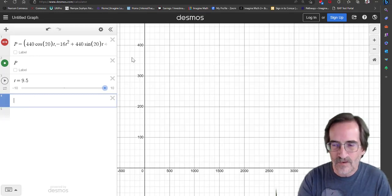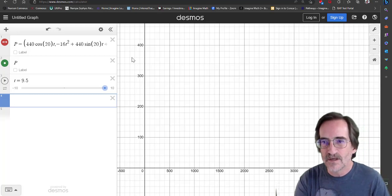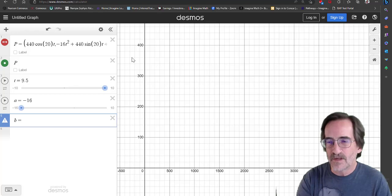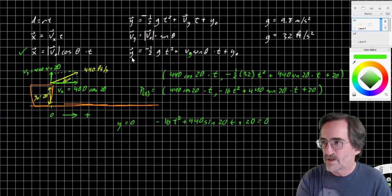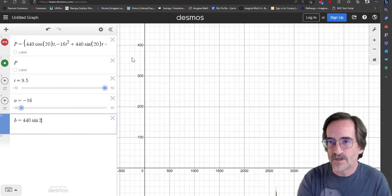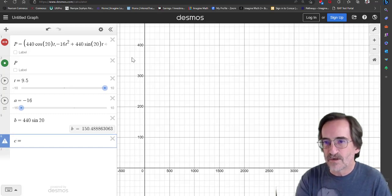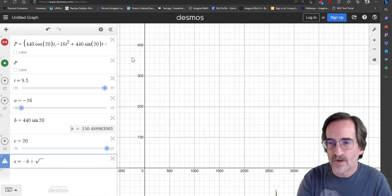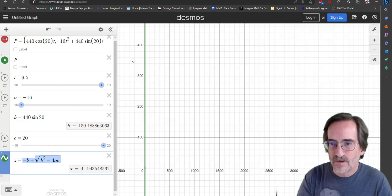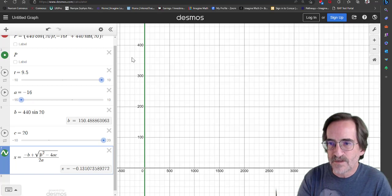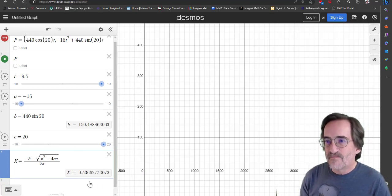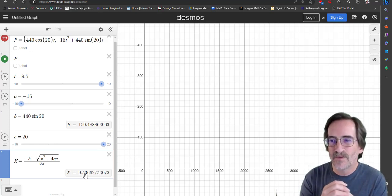So, A. I'm using the quadratic formula. Remember, AX squared plus BX plus C. A is going to be negative 16. B is going to be 440 sine 20. And C is going to be 20. And X equals negative B plus or minus the square root of B squared minus 4AC all over 2A. That's obviously not relevant to ours. So let's do the minus. And we can't do lowercase x. Capital X. So 9.53. That meshes with what we were talking about. Somewhere between the ninth and tenth second, the ball strikes the ground. So 9.53 seconds.